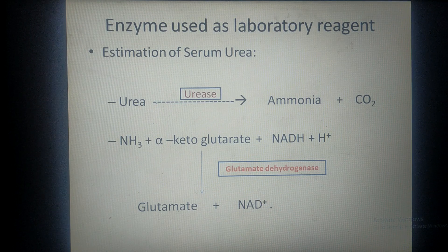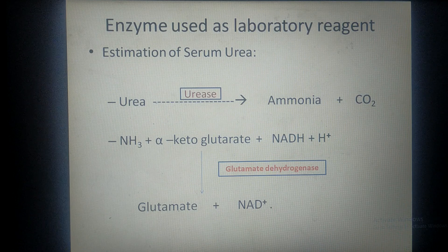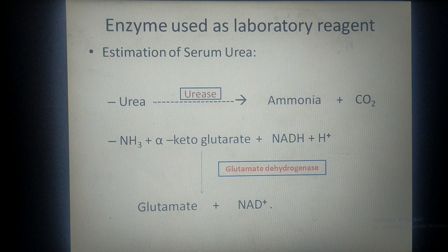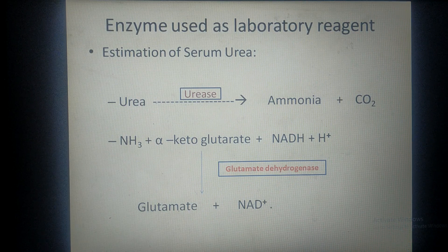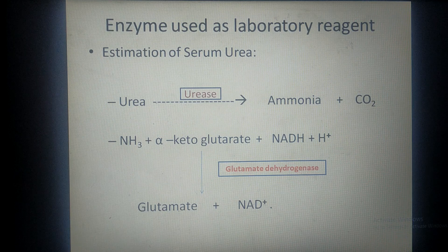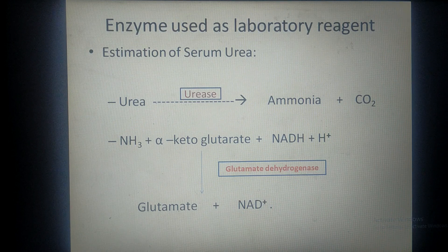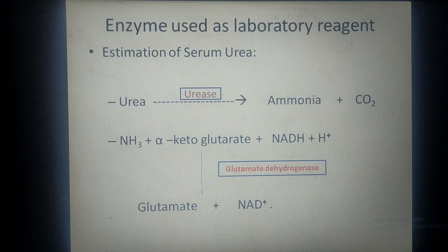At the end of the reaction, we measure how much NAD is formed. All other reagents are present in unlimited quantity except urea, so the formation of NAD depends upon the concentration of urea. If more urea is present in serum, more ammonia is formed; that ammonia combines with alpha-ketoglutarate to form more NAD. By measuring the concentration of NAD, we can measure the concentration of urea in the serum.